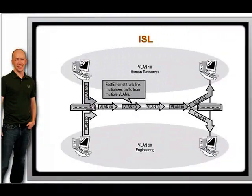The Inter-Switch Link protocol, ISL, and 802.1Q are two VLAN trunking protocols. ISL is a Cisco proprietary Layer 2 protocol that operates by re-encapsulating host frames as they are received by the switch port. The ISL encapsulation adds a 26-byte header and a 4-byte trailer to the original host frame. The header includes the VLAN ID, VLAN number, and several other fields. The trailer is a new CRC to check the integrity of the ISL frame.